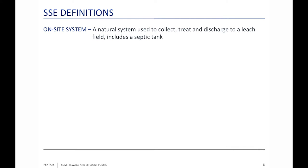An on-site system is a natural system used to collect, treat, and discharge to a leach field; it includes the septic tank. On-site means we're going to take care of the problem right here — we're not going to ship it somewhere else. A septic tank is a container used to collect wastewater so we can separate those solids and soaps from the effluent water.